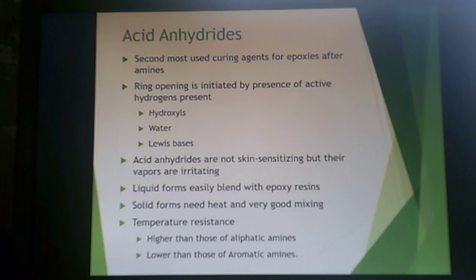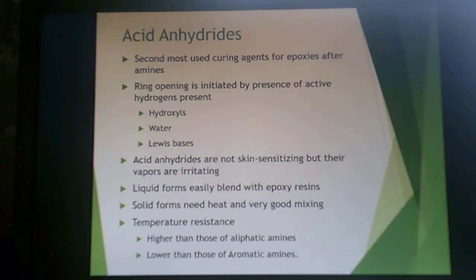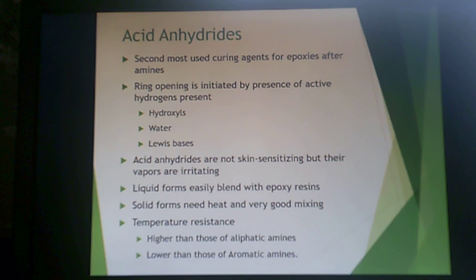Acid anhydrides are the second-most used curing agents for epoxies after aliphatic amines. The ring opening is initiated by the presence of active hydrogens — hydroxyls, water, or Lewis bases. Acid anhydrides are not skin sensitizing, but their vapors are irritating. Liquid forms easily blend with epoxy resins, but solid acid anhydrides need heat and very good mixing. They provide higher temperature resistance than aliphatic amines and lower than aromatic amines, and can sometimes be more economically viable.